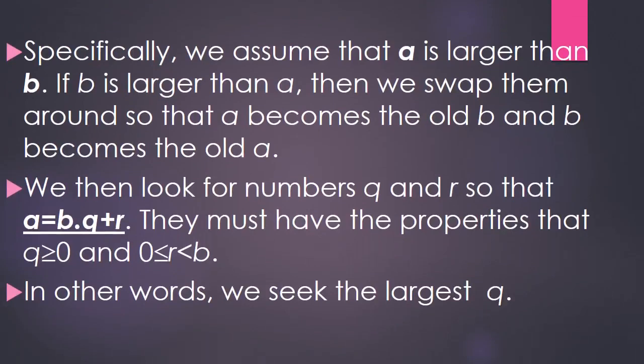Specifically, we assume that A is larger than B. If B is larger than A, then we swap them so that A becomes the old B and B becomes the old A. We then look for numbers Q for quotient and R for remainder, so that A equals B times quotient plus remainder. They must have the properties that quotient is greater than or equal to zero, and zero is less than or equal to the remainder, which is less than B. In other words, we seek the largest quotient.